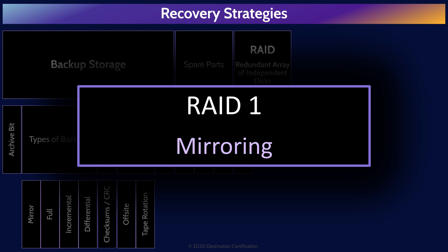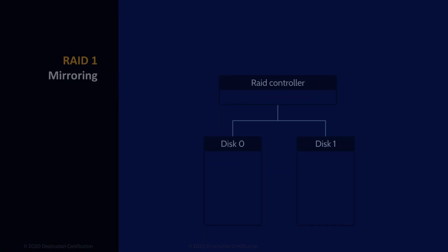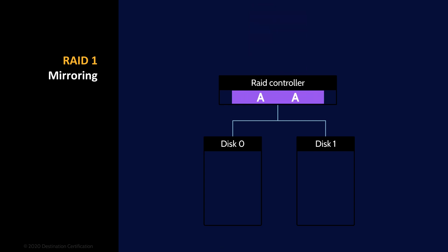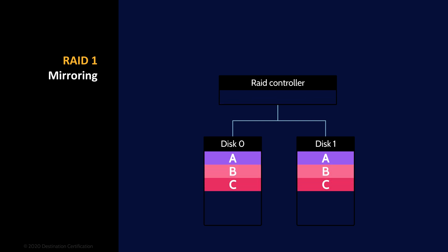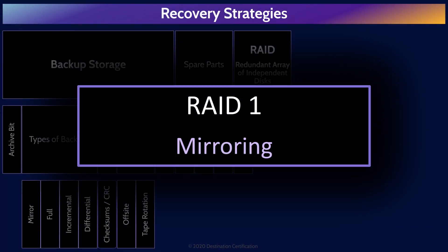RAID 1, also known as mirroring, uses two or more hard drives. When a file is sent to the RAID controller, the file is copied or mirrored — the first copy is written to the first hard drive and the second copy is written to the second hard drive. RAID 1, therefore, is all about redundancy, because if we lose a hard drive, we have simply lost a copy of the file and we have a complete copy on the other drive. RAID 10, or RAID 1 plus 0, is RAID 1 and RAID 0 together. RAID 10 therefore requires a minimum of four hard drives. A file is mirrored and then striped, creating four fragments of data which are written to four hard drives. RAID 10 gives you both redundancy and speed at the cost of a lot of hard drives.